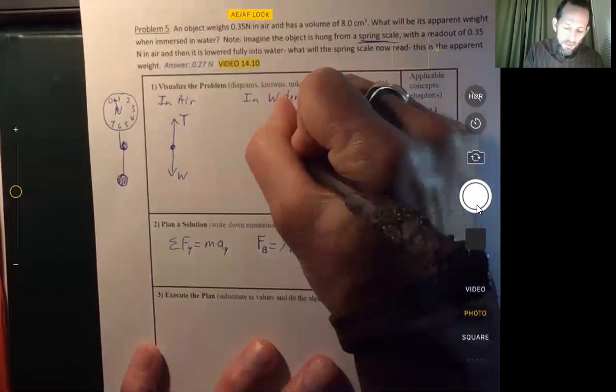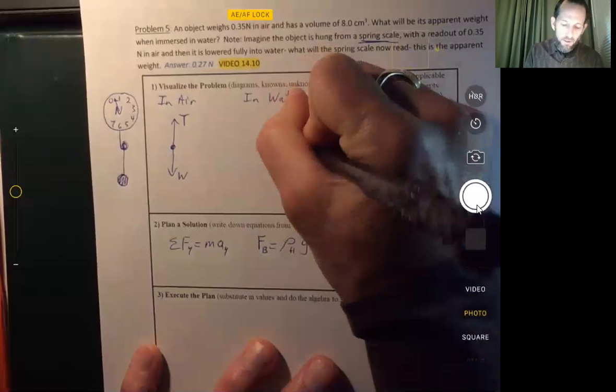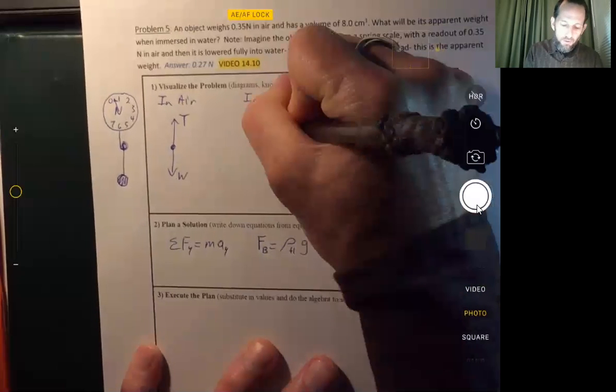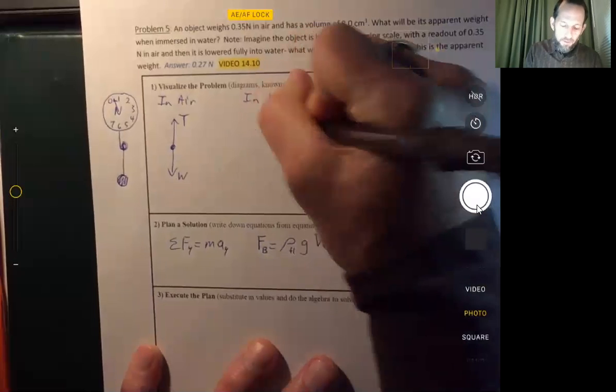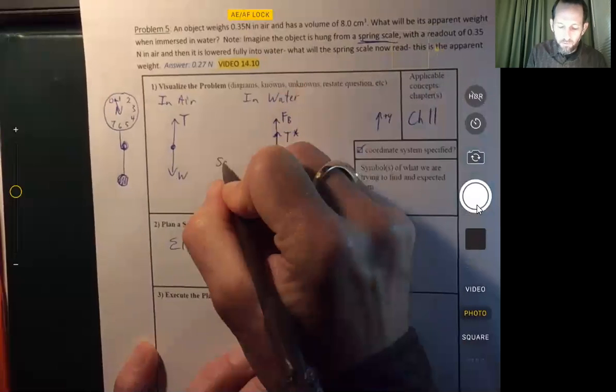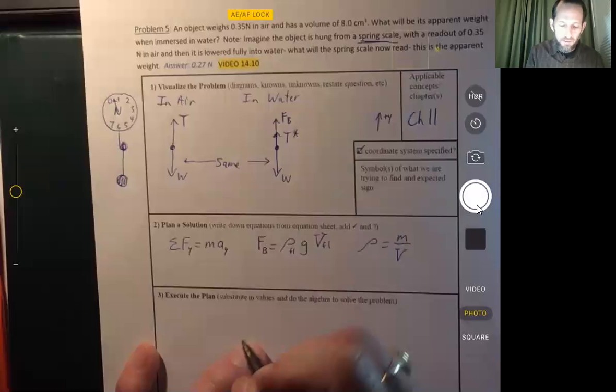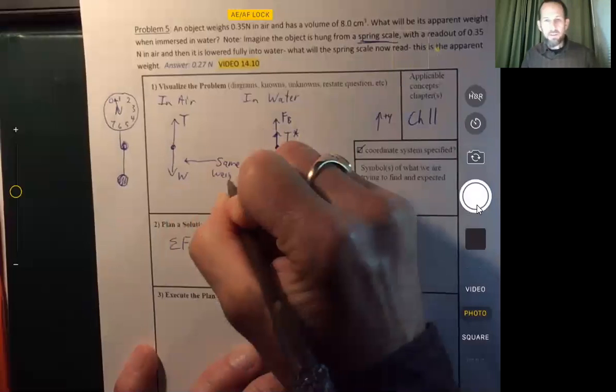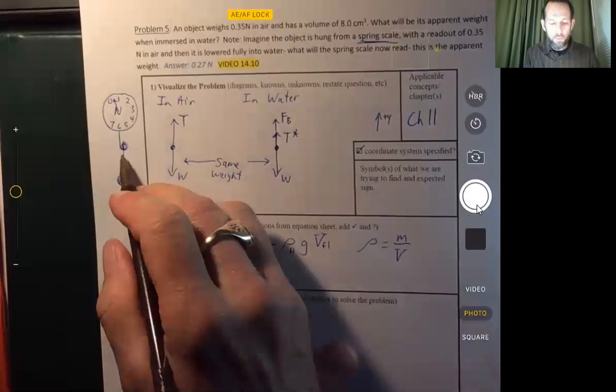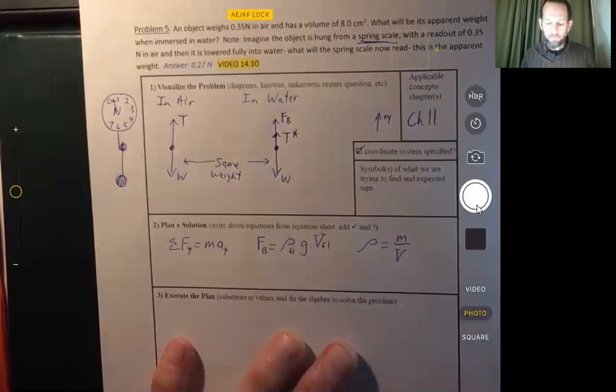I'm going to call it T star. And the reason the tension is not as much when it's in the water is that there's a buoyant force acting. The object still has the same weight. The weight doesn't change. But since there's a buoyant force, the tension changes, and the tension in the string is what pulls on the spring scale. And so that's why the weight seems to be different.